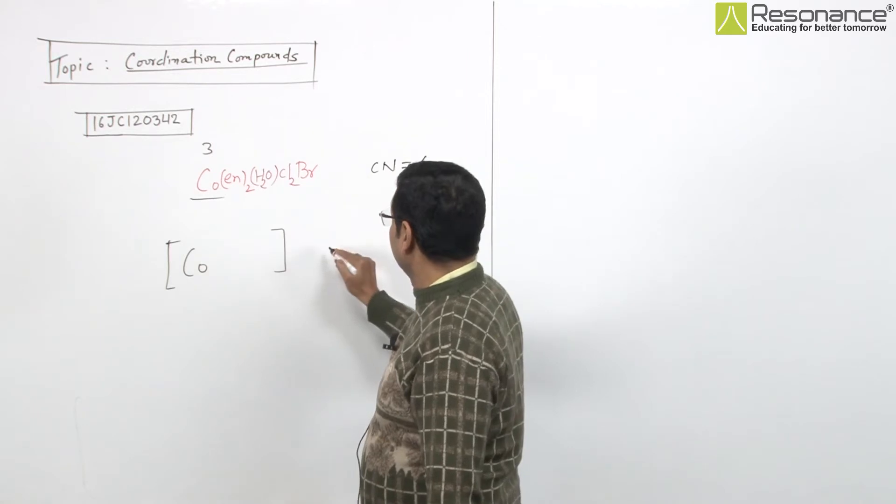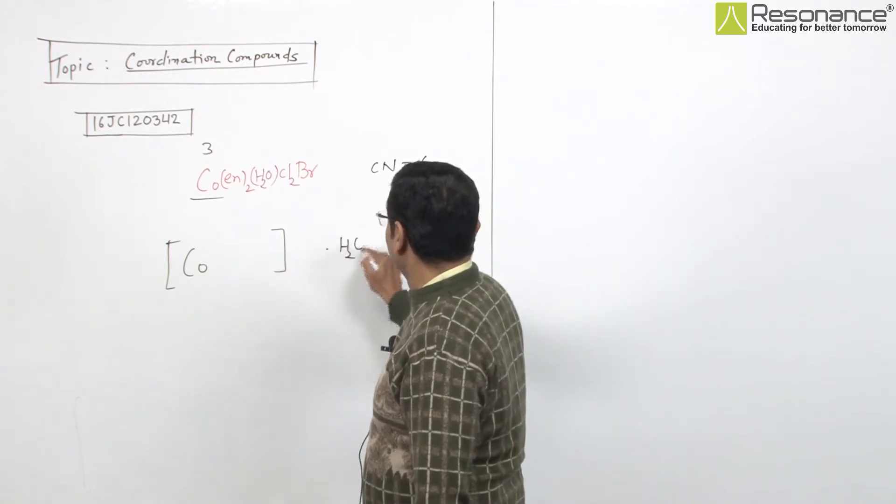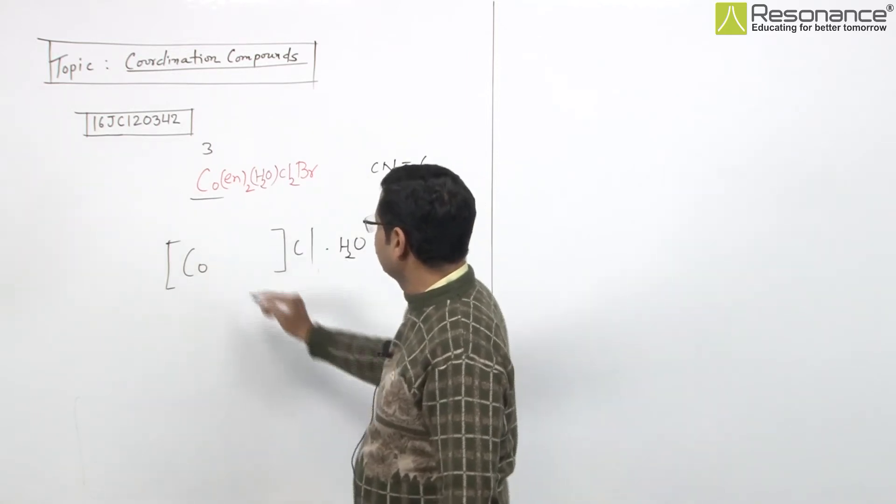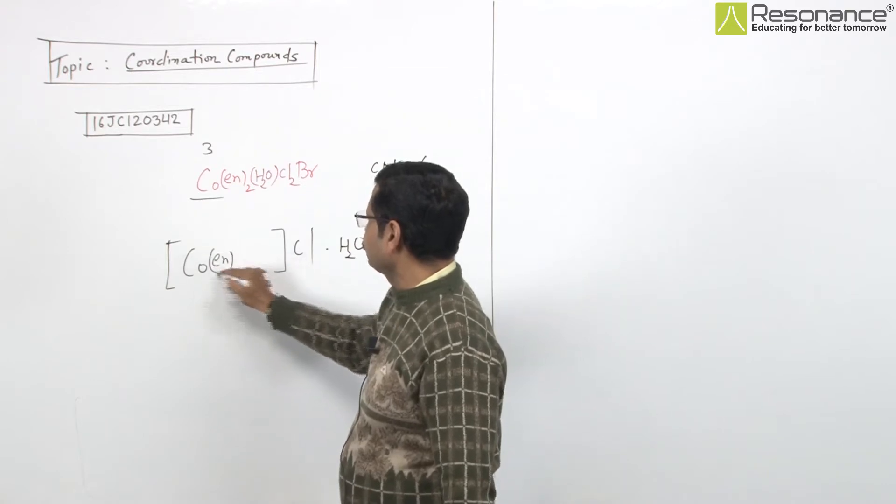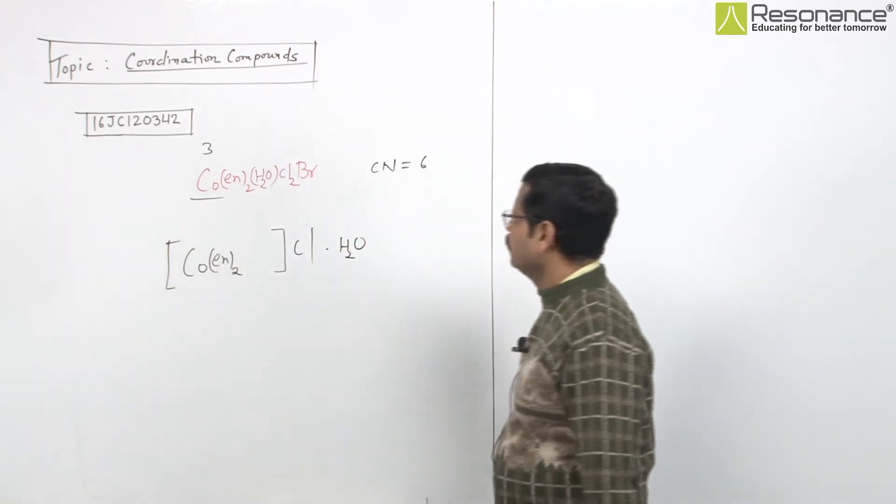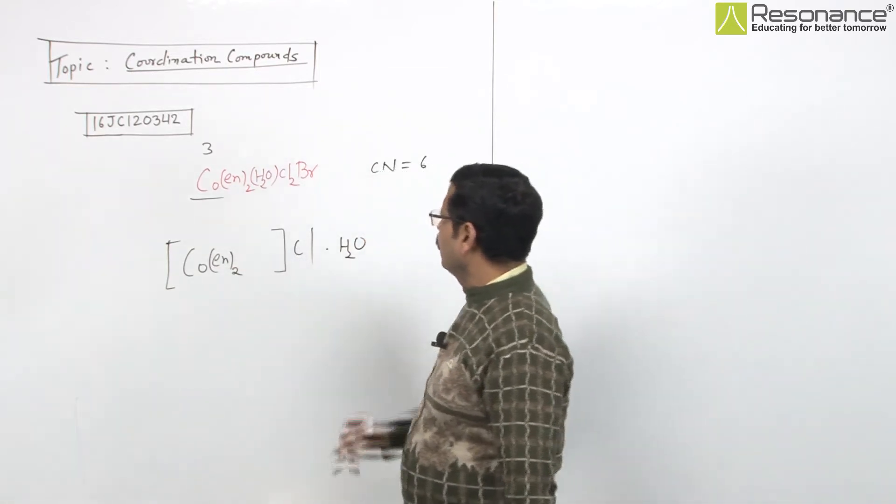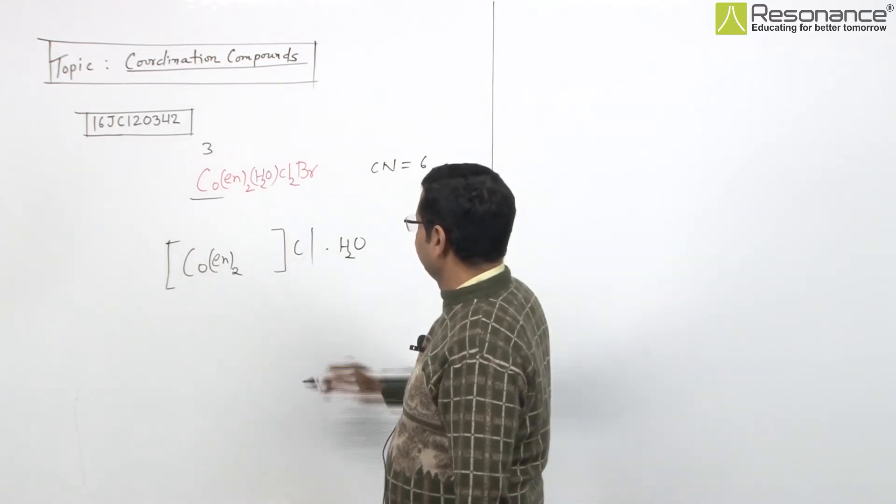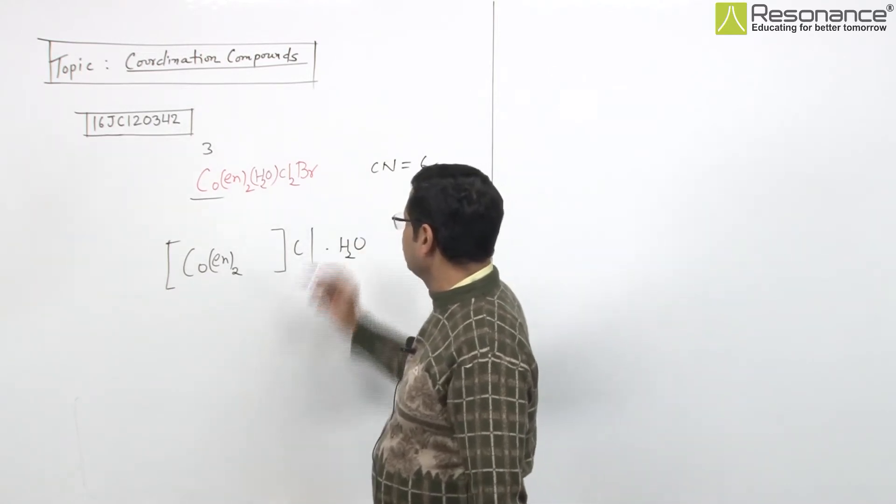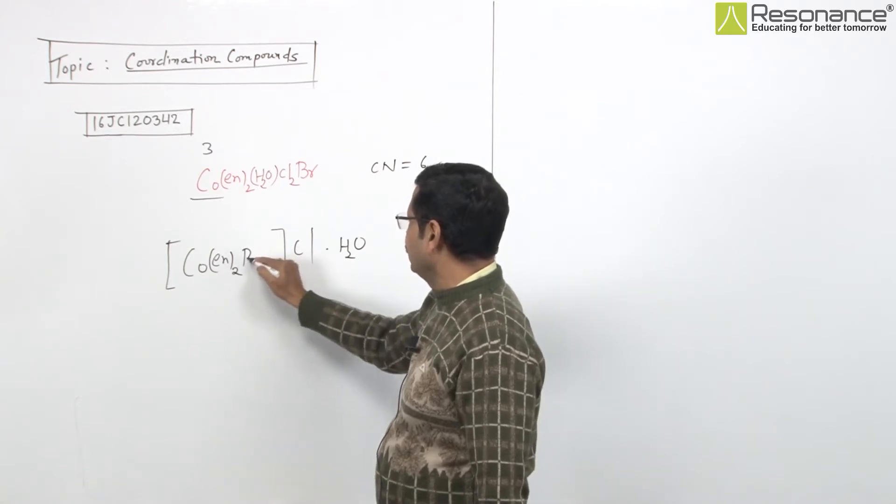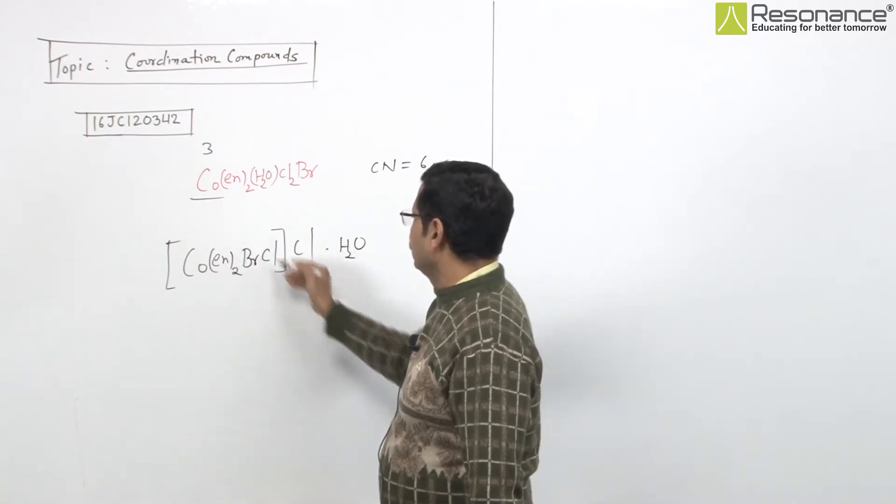Water has to go here as dot H2O crystalline water, and one chlorine has to be placed inside. So en is twice inside, not outside. What remains? For coordination number 6, one Cl, one Br - no other option. We can write them alphabetically.